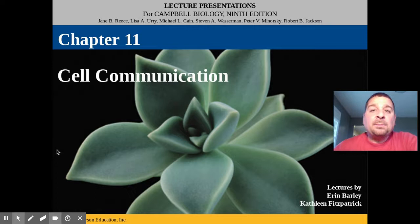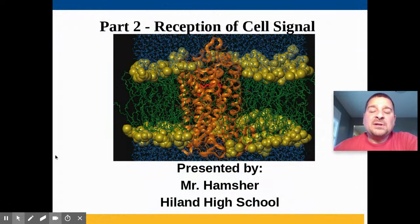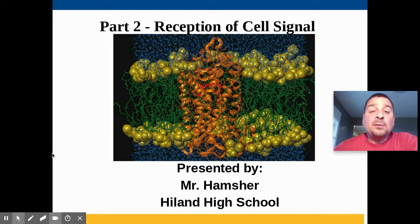Hey, Hammy here, coming to you with part two of chapter 11 on cell communication and cell signaling, in which we will talk about reception. Remember there are three parts of cell communication: reception of the cell signal, transduction of that signal, and then the cellular response. In this video, we want to look at reception — how do cells receive signals from other cells?